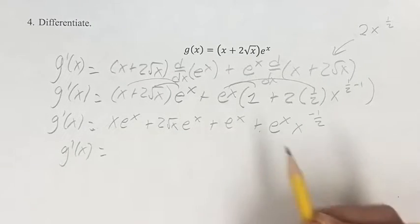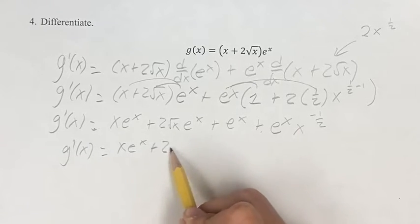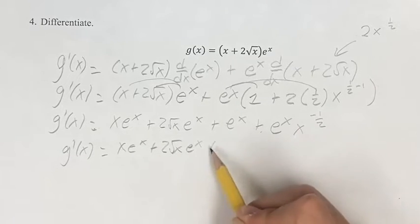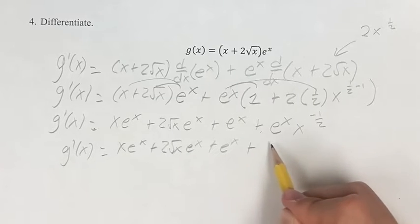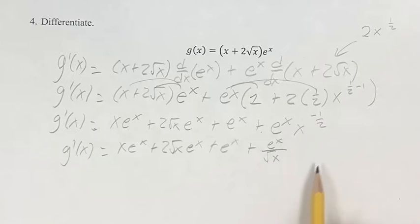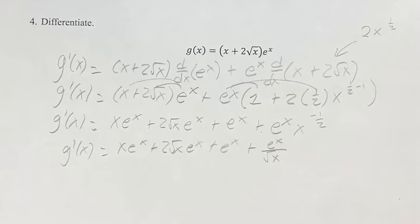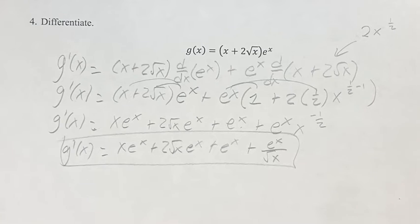So finally, just simplifying this one more step, we get x e to the x, plus 2 root x e to the x, plus e to the x over the square root of x. Doing this because you can bring it into the denominator, which will make it e to the x over x to the 1 half, which we've already seen is equal to the square root of x. This is your final answer for the derivative of g(x).